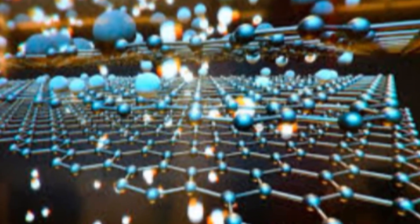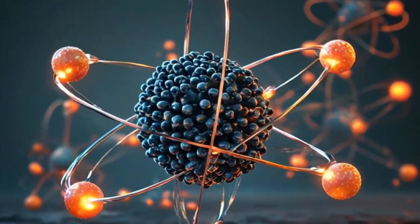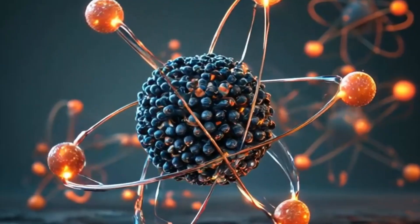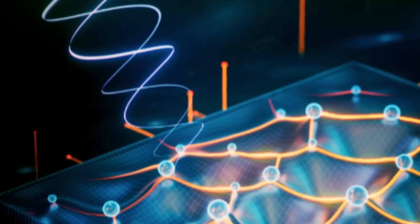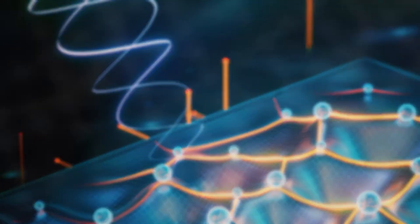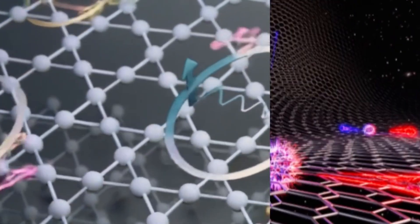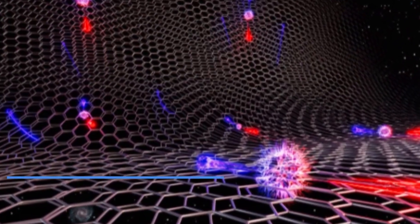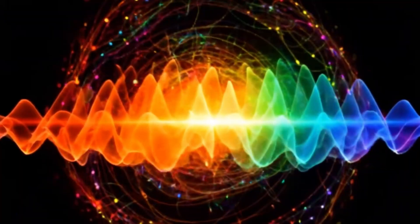This realization led to the emergence of quantum materials, systems in which quantum mechanics is not a correction to classical physics, but its foundation. Superconductors, topological materials, and exotic oxide interfaces belong to this category. In these systems, electrons form highly correlated states, behaving less like independent particles and more like members of a tightly choreographed ensemble.